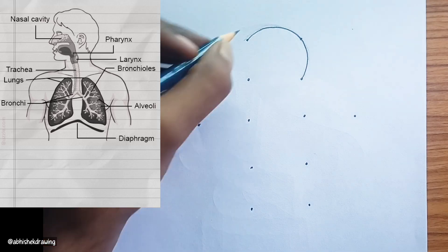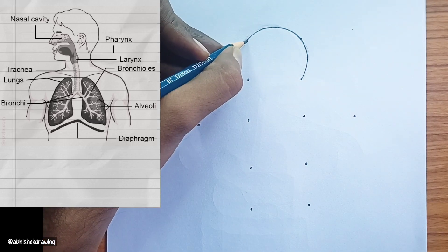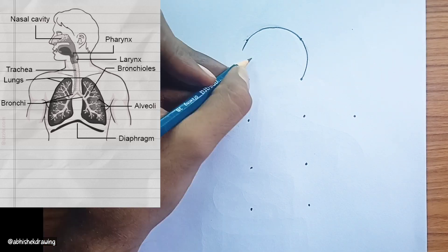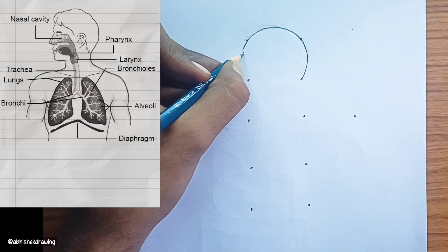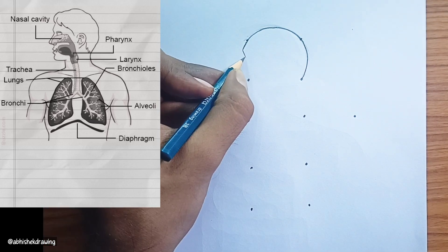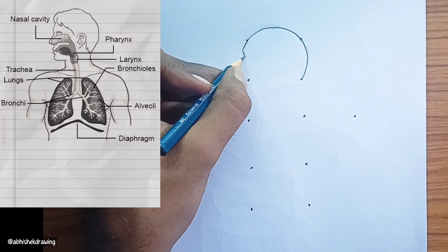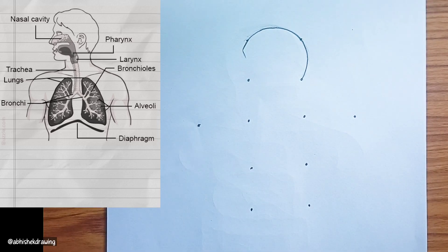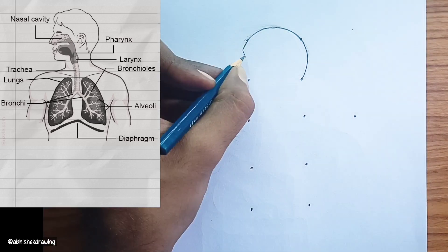Pharynx. Often called the throat, the pharynx is a muscular tube that serves as a passageway for both air, from the nasal cavity, and food, from the mouth.